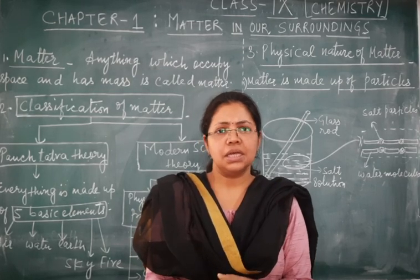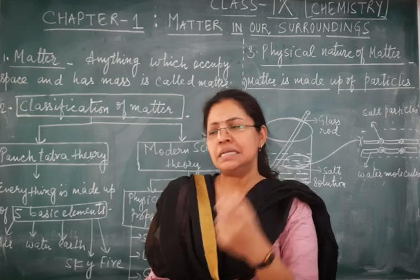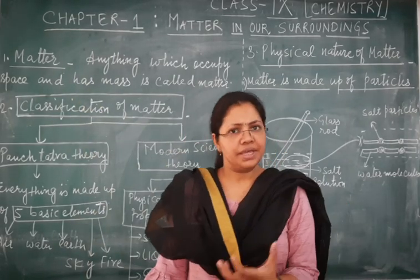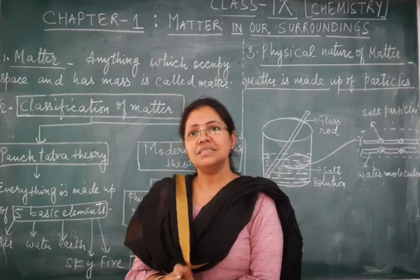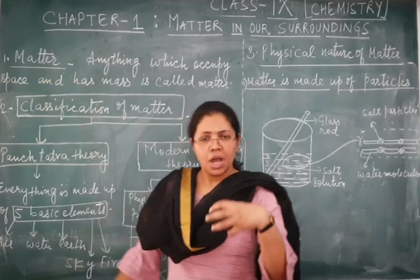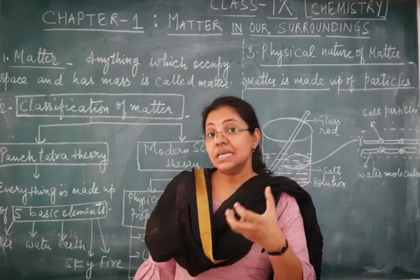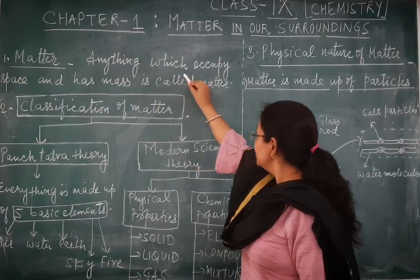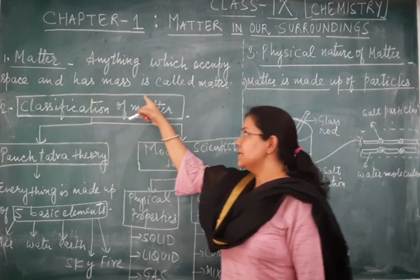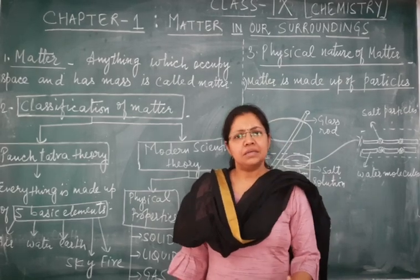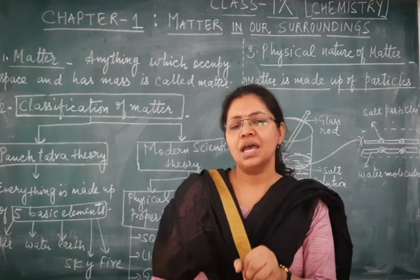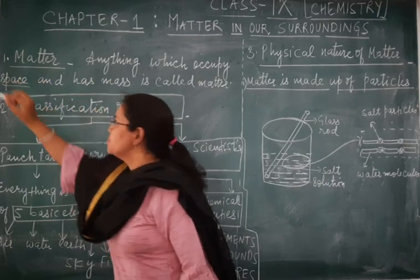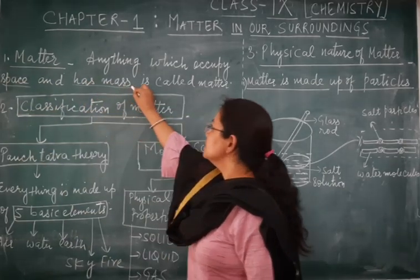So these things in the field of science are given a technical name, and that is matter. The various things which we see in our surroundings are called matter. Matter can be defined as anything which occupies space and has mass. To call anything matter, that particular thing has to satisfy two conditions: it should occupy some space and it should have some mass.